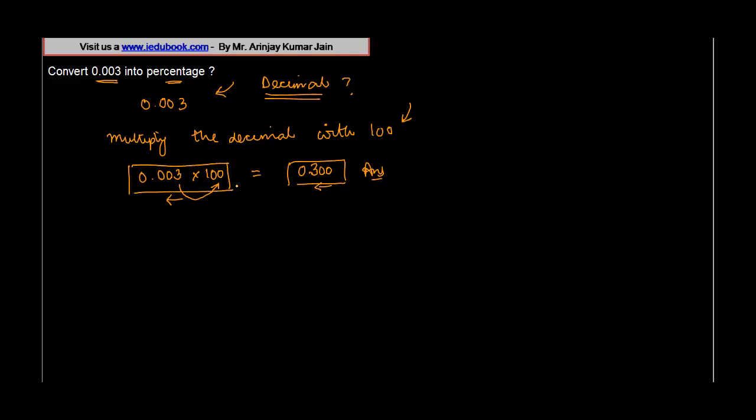So that is the way you basically convert a decimal into percentage. Let's take another example. Let's suppose you had 3.7. Again, 3.7 into 100. Now 100 into 7 will give you 700, so you have 70 carry. 100 into 3 gives you 300 plus 70.